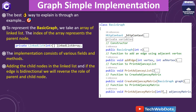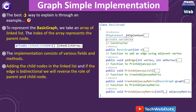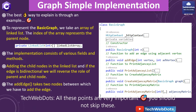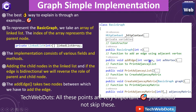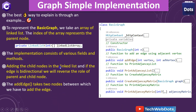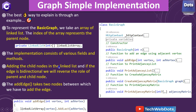The implementation consists of various fields and methods. We add the child node into the linked list, and if the edge is bi-directional we reverse the roles of parent and child node. The add edge method takes two nodes between which we need to add the edge — a current vertex and the vertex we want to connect.